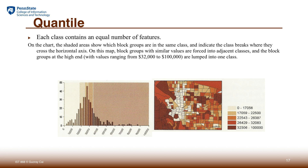The second popular classification scheme is called quantile. Quantile classifies values into groups so that each group has the same number of features. For example, if you want to form four groups for 100 things, then each group will have 25 things. The map shown displays population by block group, with each area representing a block and the color representing the population count. By using quantile, each class occupies approximately the same number of areas, so you should not see any dominance of one color. The breaking points depend not just on the value but on the ranking order of a particular area among all areas.